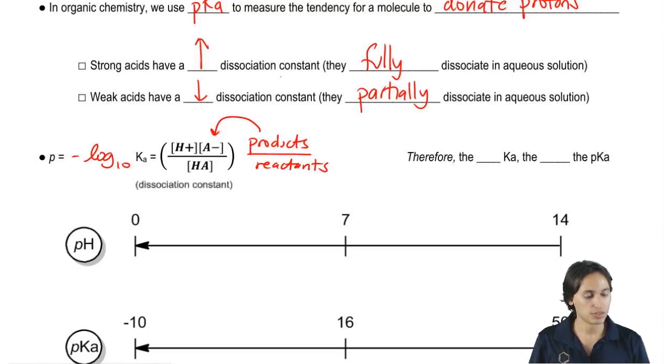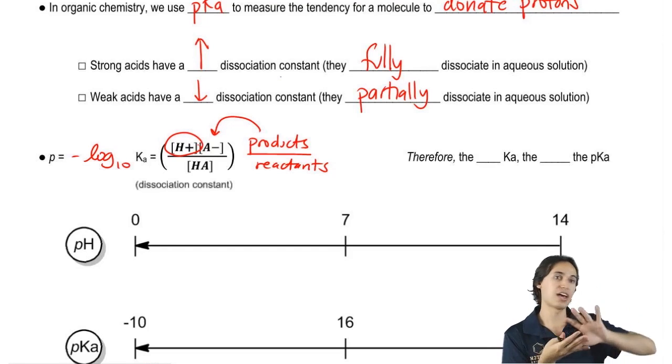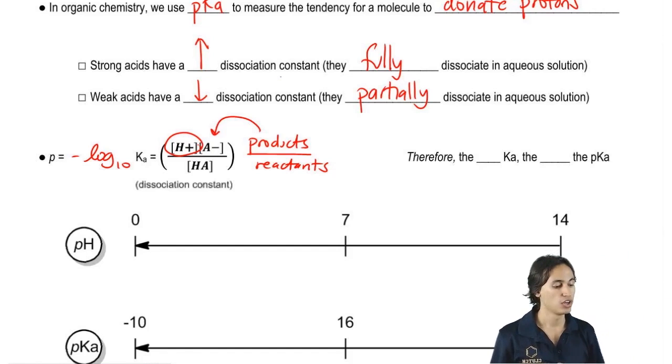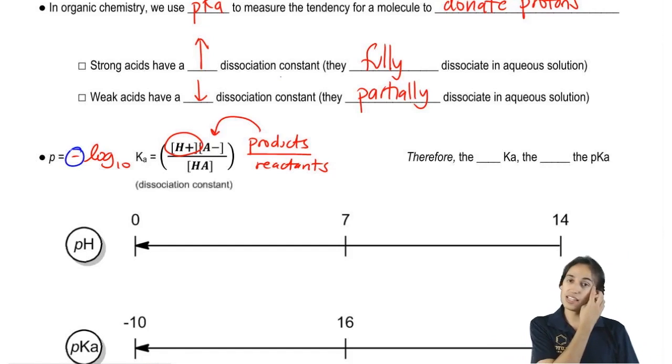Now I'm not going to make you guys calculate every single thing, but check it out. Products in this case are just dissociating into H+, and reactants are what happens before it fully dissociates. Does that make sense? So the Ka is basically the ratio of how much of my acid is going to actually become a proton.